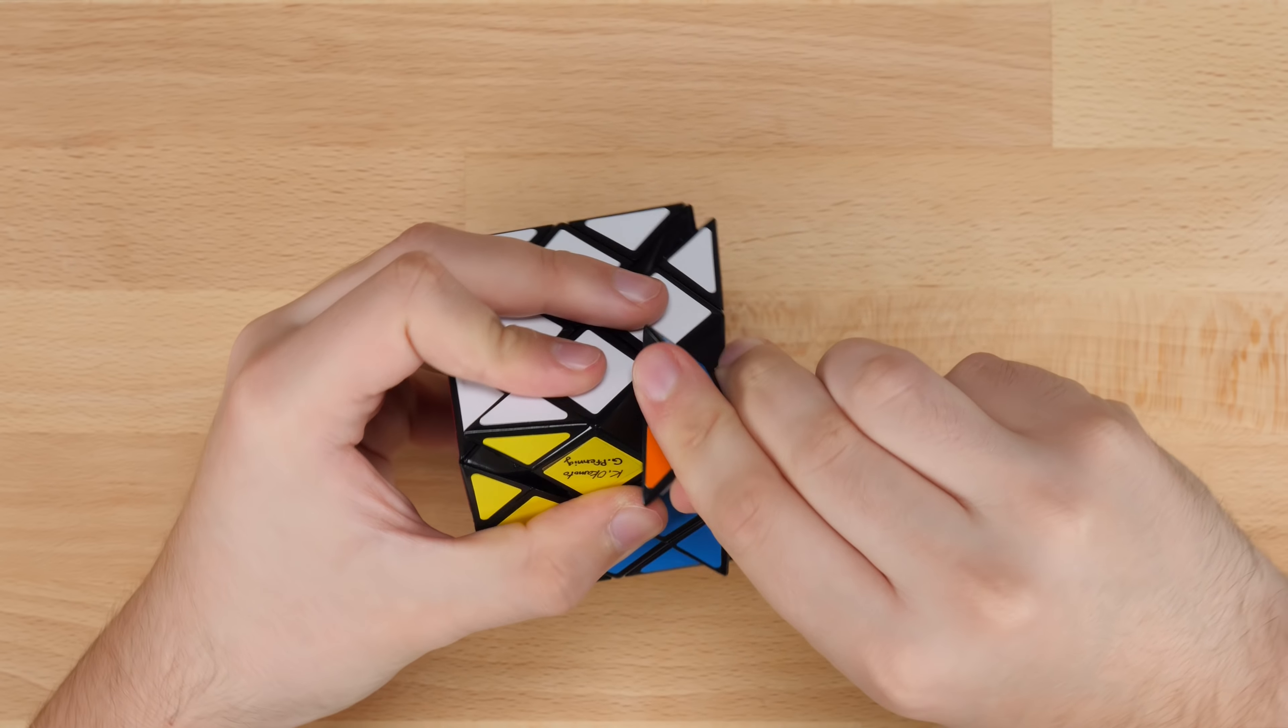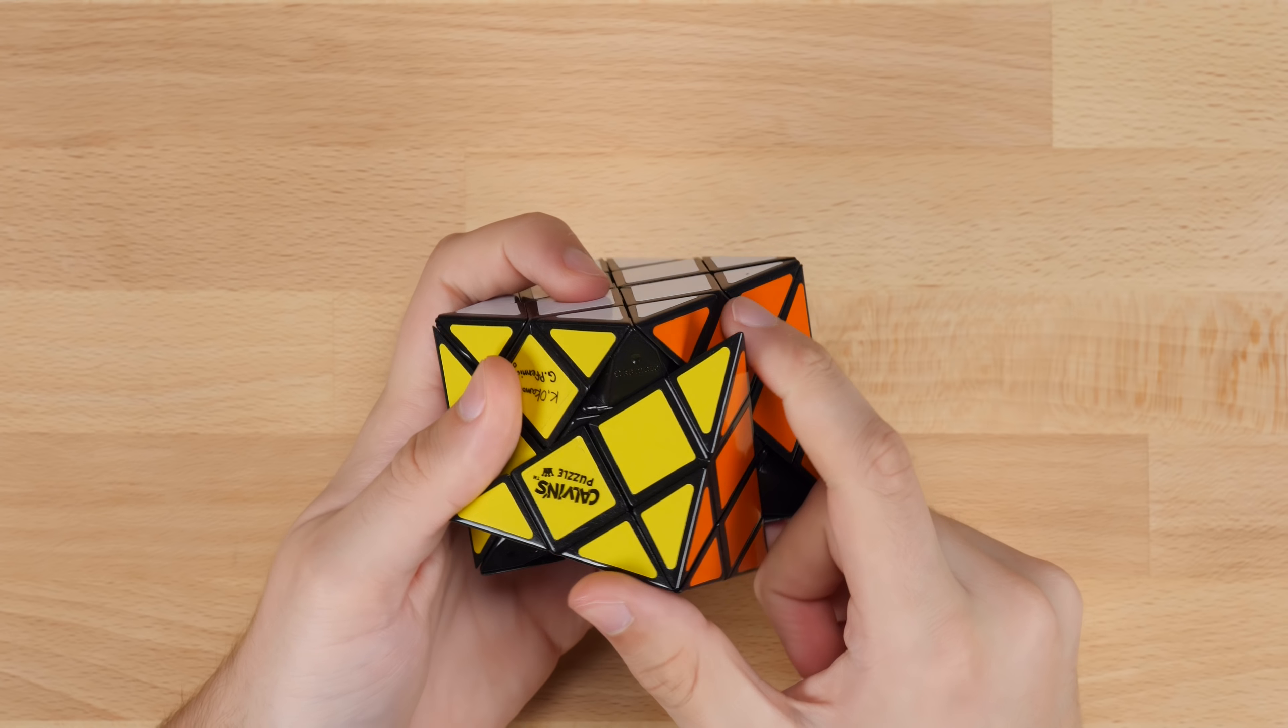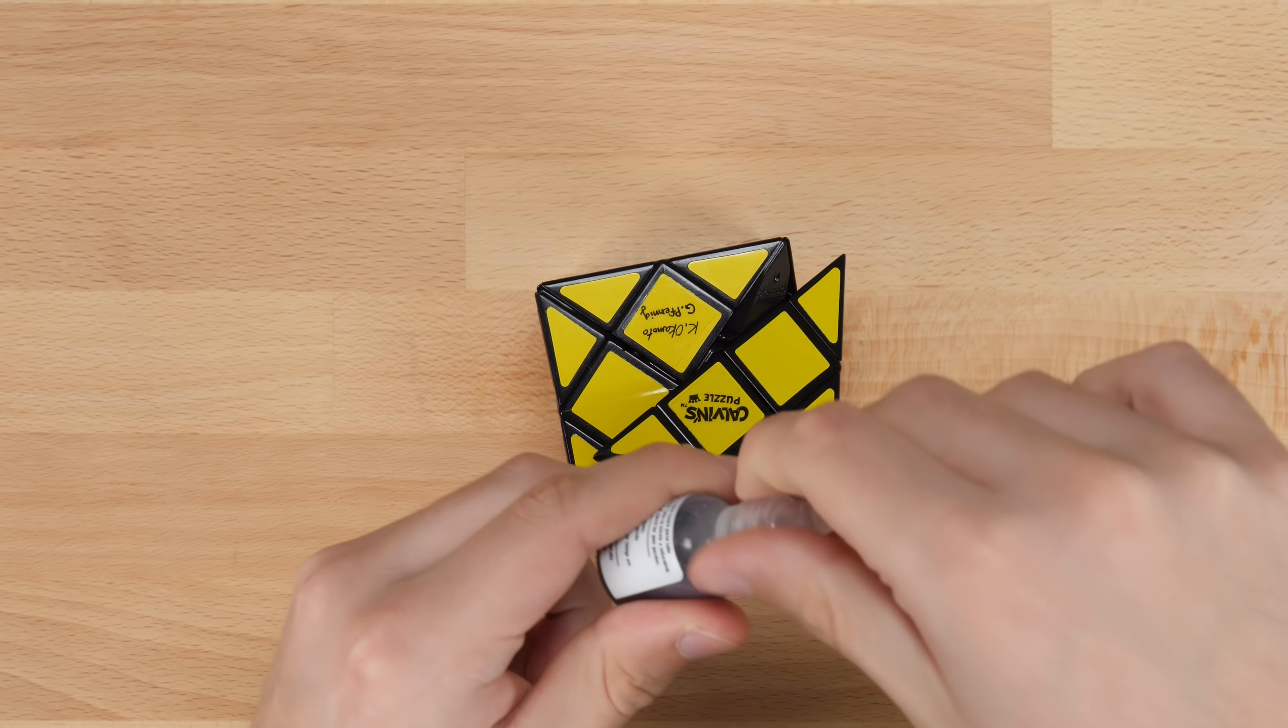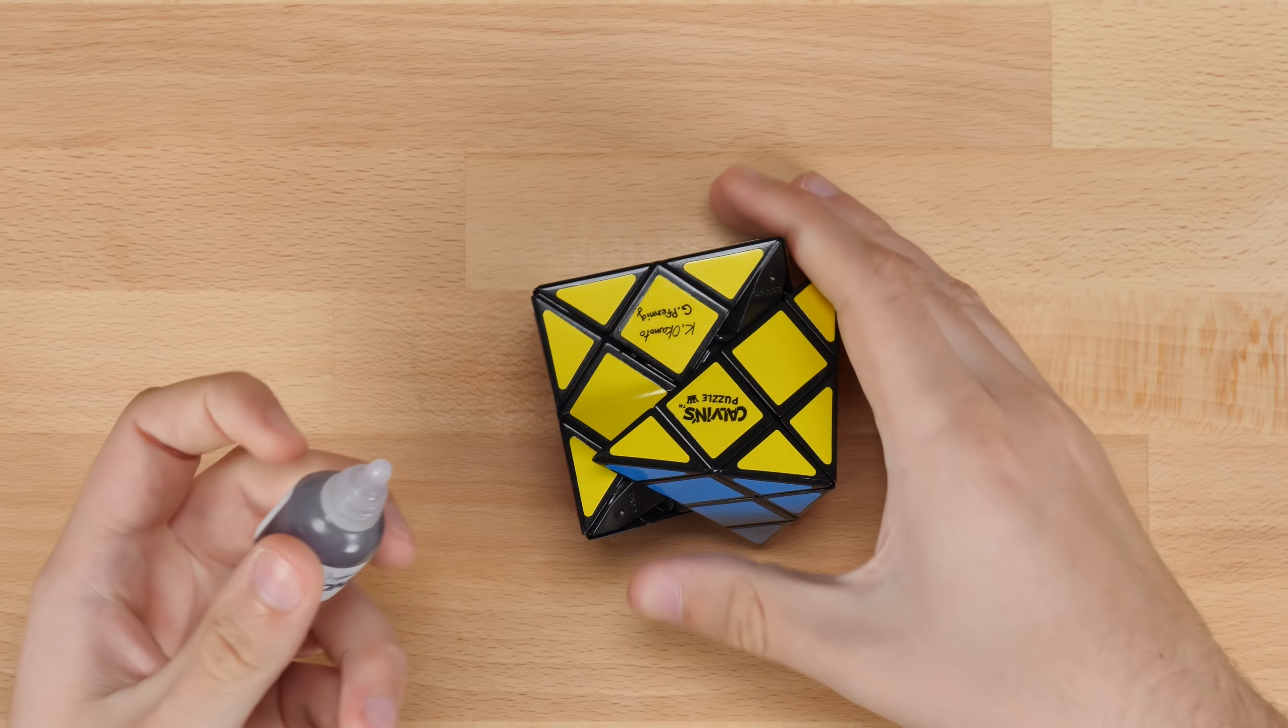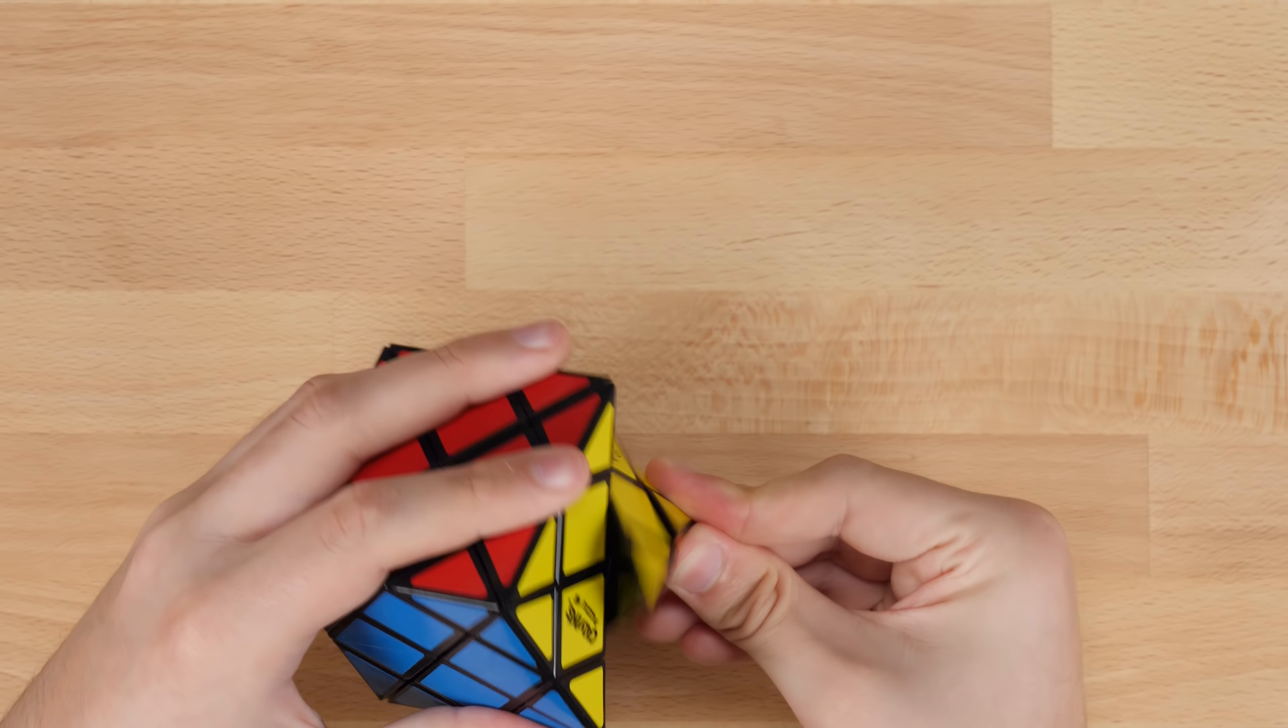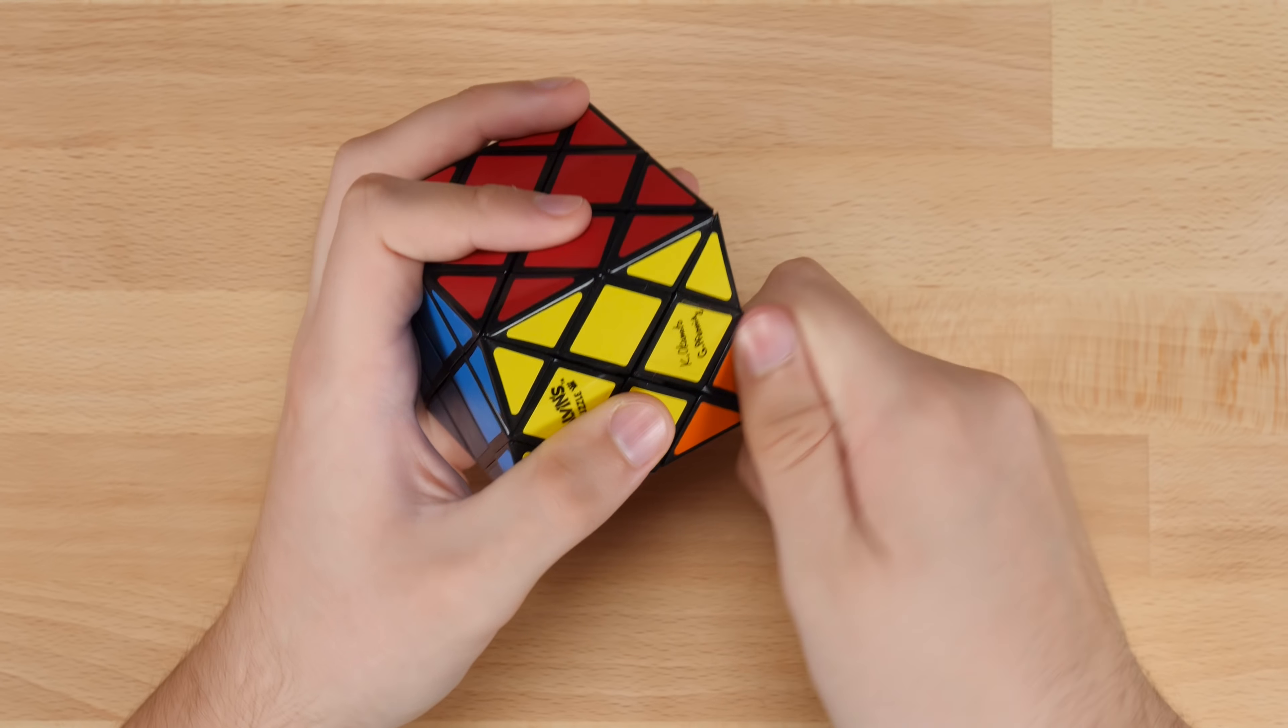It definitely is quite stiff. Those corner pieces are very hard to move. Let's see if we can maybe put in a drop of lube and see if that'll make any difference. I've got some DNM here that I might see if I can throw in there just to see if I can speed it up at all. All right, let's see if that does anything. Yeah, that helps a little bit for sure.